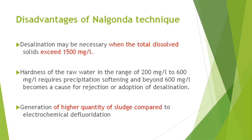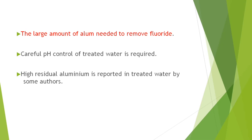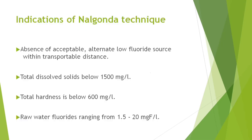The biggest disadvantage is that if total dissolved solids exceed 1500 mg/L, prior desalination is needed. Water hardness also matters: if it is 200 to 600 mg/L it requires precipitation softening, and if it is beyond 600 mg/L it may require desalination. There will also be a high amount of sludge compared to other methods. Indications: total dissolved solids should be less than 1500 mg/L, total hardness below 600 mg/L, and raw water fluoride should be between 1.5 to 20 ppm.